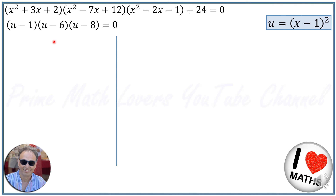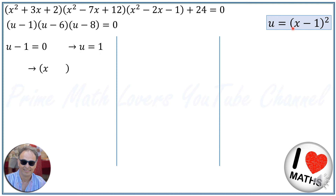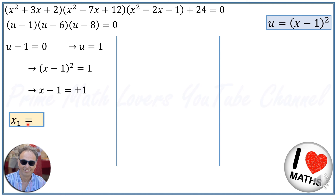Case 1: u-1=0, so u=1. Since u=(x-1)², we have (x-1)²=1, so x-1 = ±1. If x-1=-1, then x₁=0; if x-1=+1, then x₂=2. So two of the roots are 0 and 2.